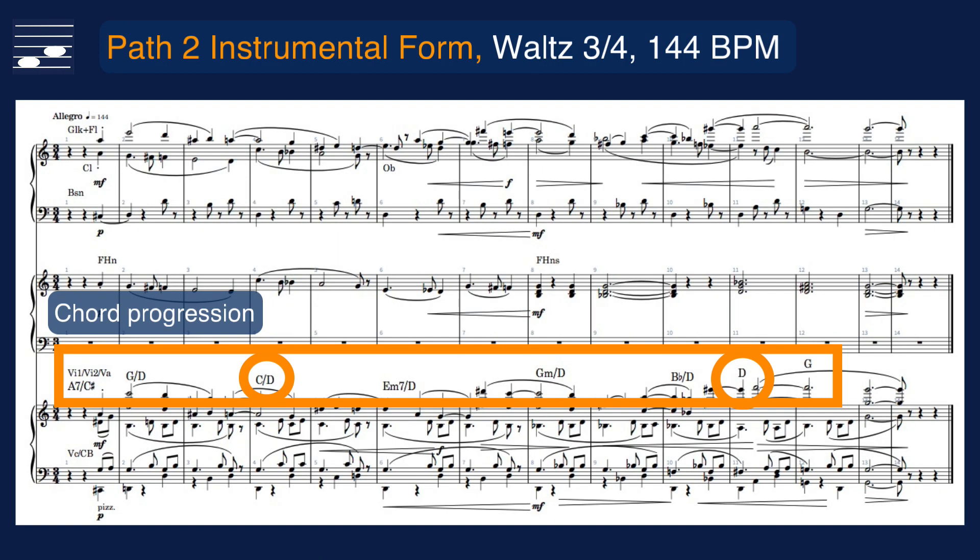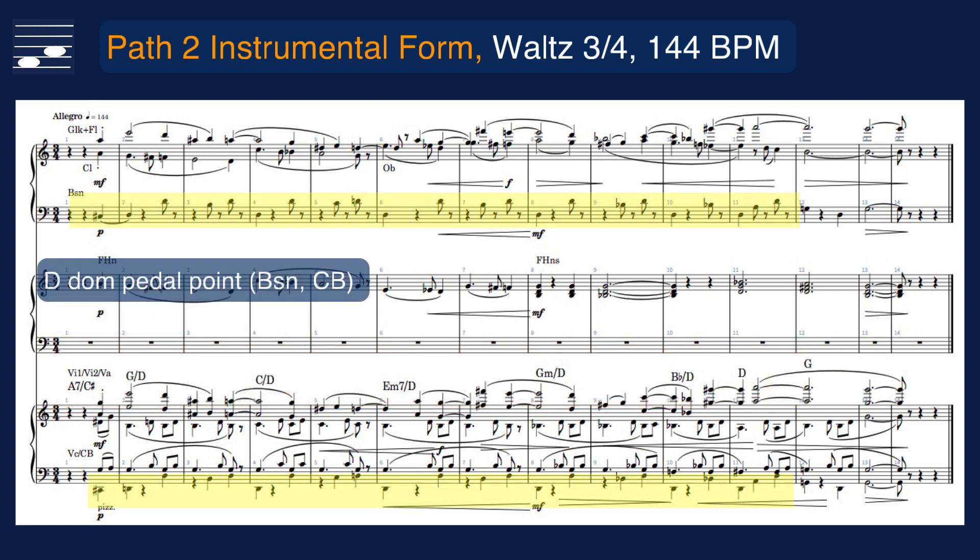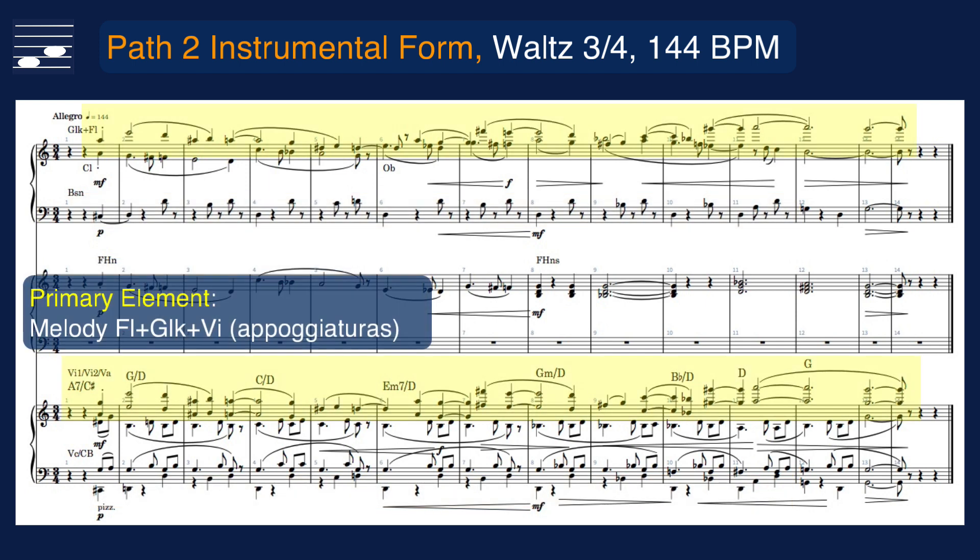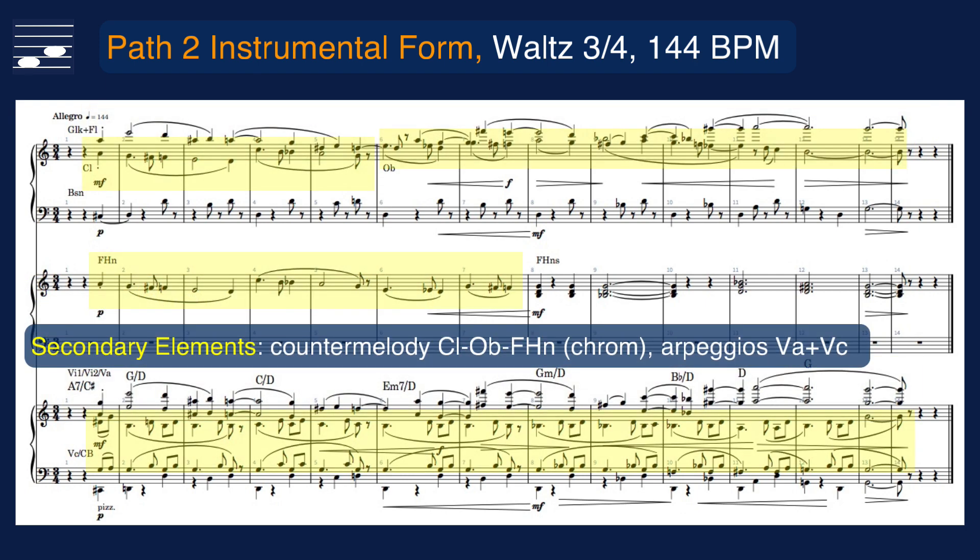The second orchestral example is a lively waltz, with the chords shown once again above the strings. The D-dominant pedal point is played by bassoon and pizzicato basses in octave leaps. The primary element is the gradually ascending melody for flute, glockenspiel and violins.